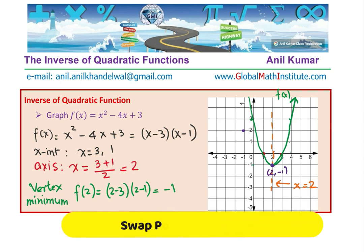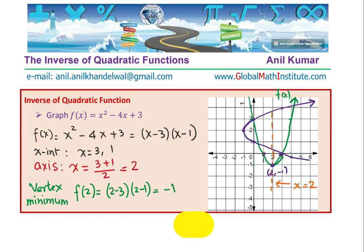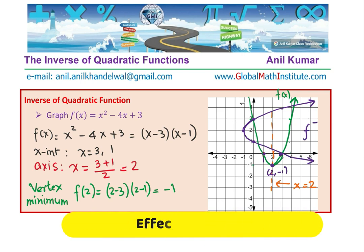The inverse will not be a function since the parabola fails the horizontal line test. Taking the critical points: (1, 0) on the function becomes (0, 1) on the inverse, and (3, 0) becomes (0, 3). For additional points, (0, 3) on the function maps to (3, 0), and (4, 3) maps to (3, 4). Connecting these points gives us the inverse function graph — that is the inverse of the function. With factored form we sketched the parabola, and swapping coordinate points gave us the inverse.